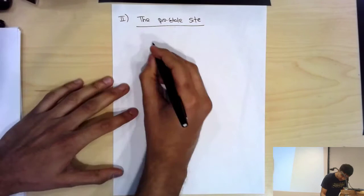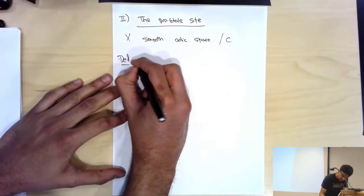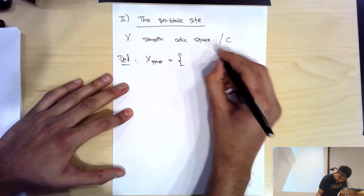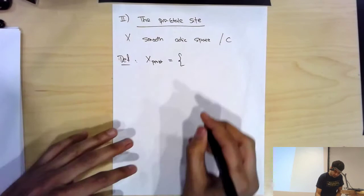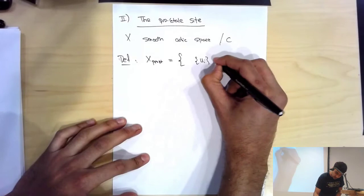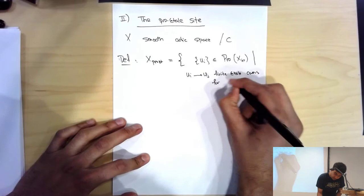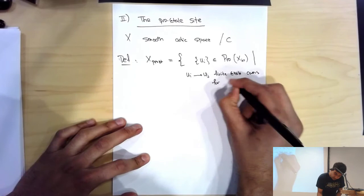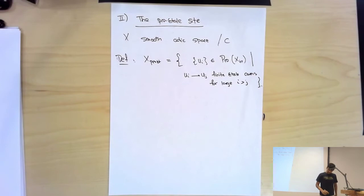Let X be a smooth adic space over C. The objects of the pro-étale site are certain projective systems of étale morphisms to X — they are pro-objects. I'll denote them as {U_i} in the étale site of X. They satisfy the condition that the transition maps are eventually finite étale and surjective: for i bigger than j, the map U_i → U_j is finite étale surjective. For example, you could take an open subset of X — that gives an object of the étale site — and then have a tower of finite étale covers. Those are the kinds of objects we're interested in.